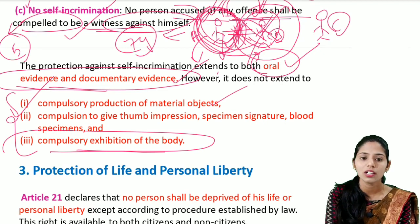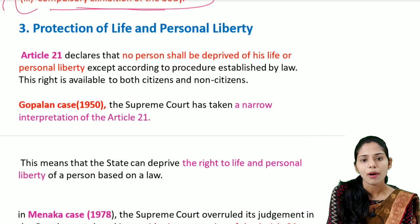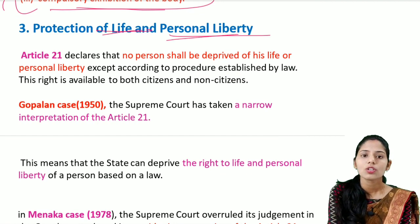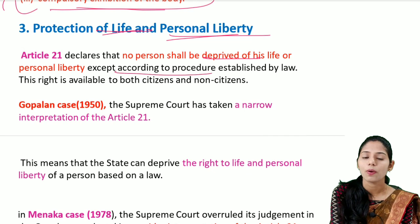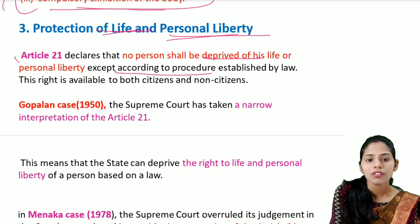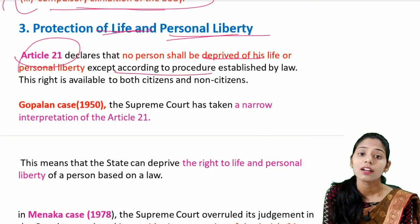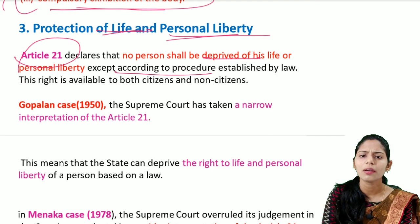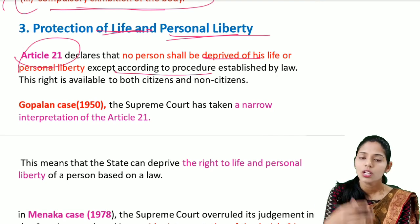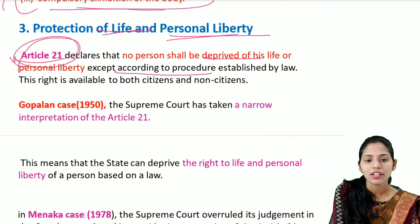Article 21 deals with protection of life and personal liberty. It declares that no person shall be deprived of his life or personal liberty except according to the procedure established by law. Article 21 is inherent in many types of rights, including right to shelter, right to sleep, right to livelihood, right to a free trial, right to privacy, right to information, and many more — please refer to Laxmikant for the full list of inferred rights under Article 21.